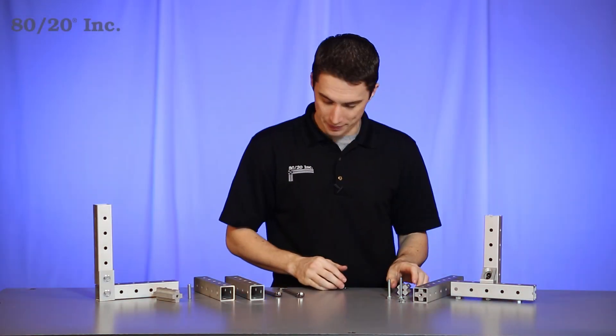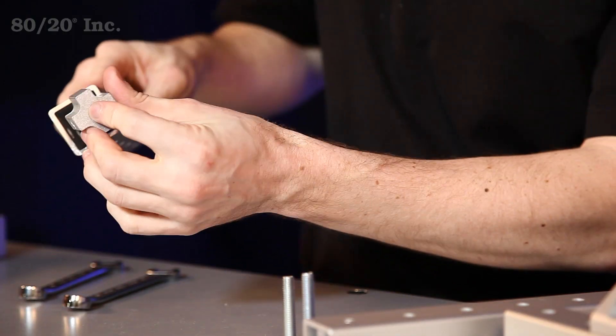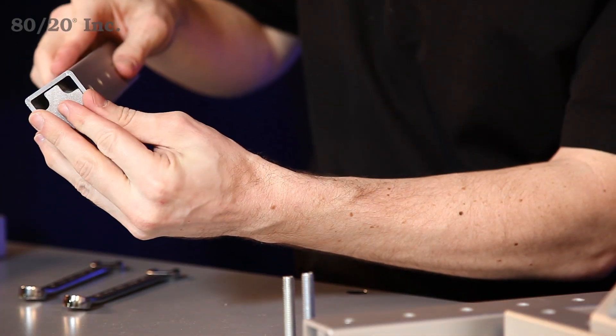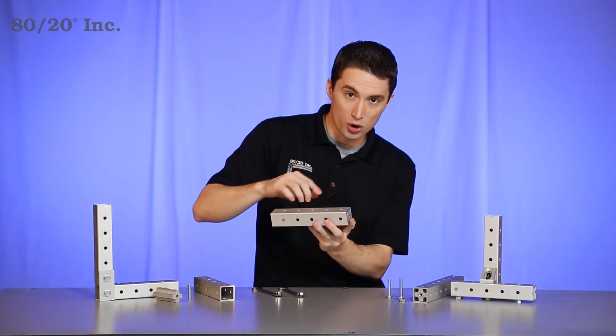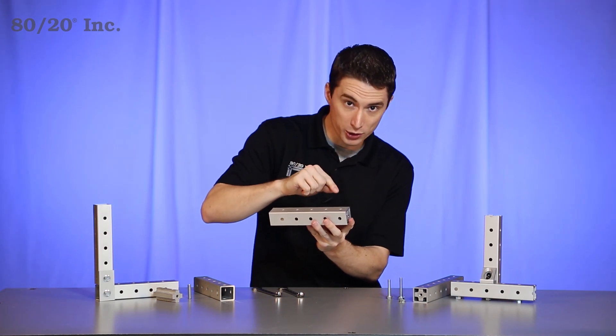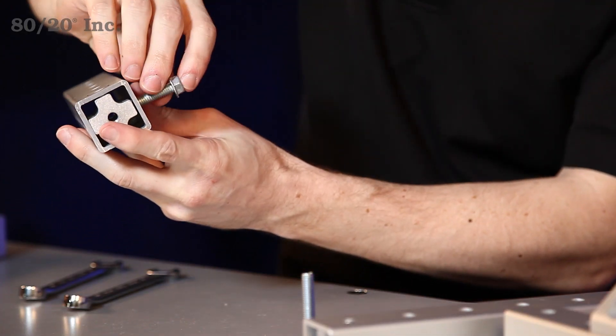The first thing you're going to want to do is grab your insert, slide it into the end of one of your profiles. We'll line up the holes on the tube insert with the pre-drilled holes on the profile and slide our bolt through.